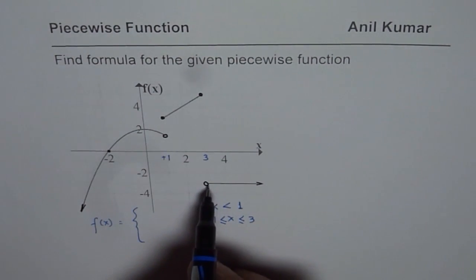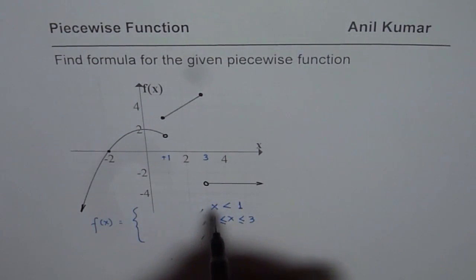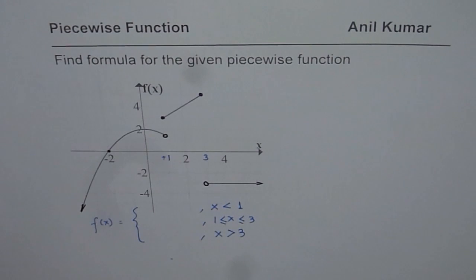Then we have the third piece here which extends to infinity from 3. So we can say x is greater than 3. So these are the three pieces.